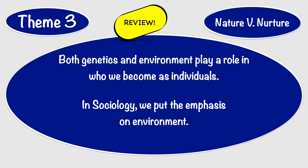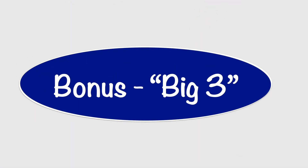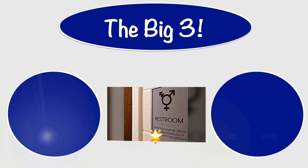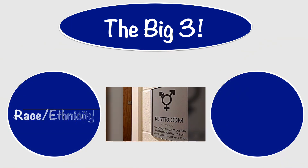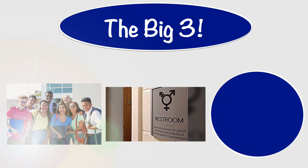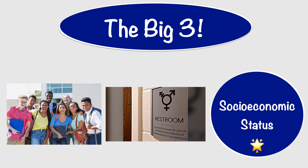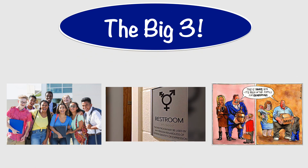In this class, we're going to emphasize the role of environment. We also have bonus 'Big Three' themes throughout the semester: the role of sex and gender — whether we're male, female, trans, masculine, feminine, or transgender; race and ethnicity — whether we are African-American, Latino, white, Asian, Native American, or a combination of various races; and lastly, socioeconomic status — looking at whether we're born into a wealthy family or a low-income family, and what that says about who we're going to become and our chances for success.